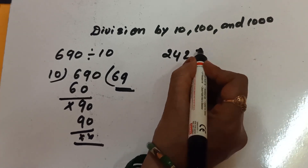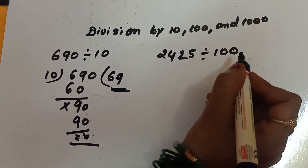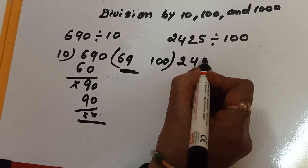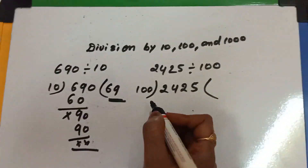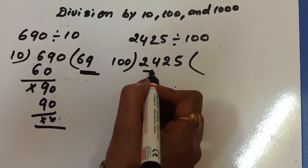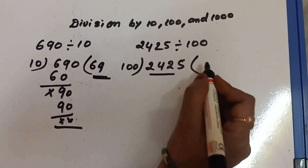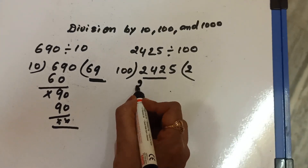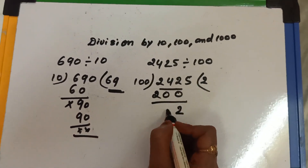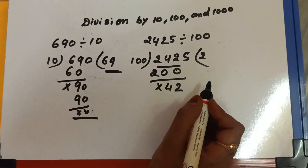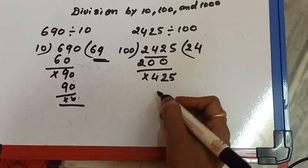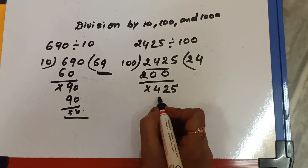Now taking one example for 100: 2425 divided by 100. We write it as 100 into 2425. Because we are dividing by 100, we take three digits. 100 twos are 200; 2 minus 0 is 2, 4 minus 0 is 4, and 2 minus 2 is 0.